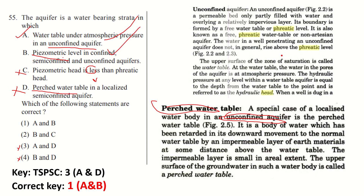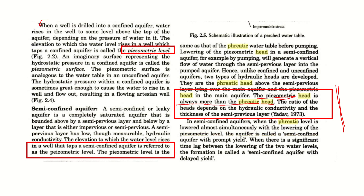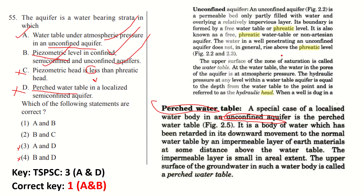Now let us confirm: option A states that the water table is under atmospheric pressure in an unconfined aquifer — yes, that is correct. Water in an unconfined aquifer is at atmospheric or normal pressure, so A is correct. For option B, the term 'phreatic level' is used in unconfined aquifers as the water table level. In confined aquifers we use the piezometric level, and in semi-confined aquifers the water level rise is also referred to as the piezometric level.